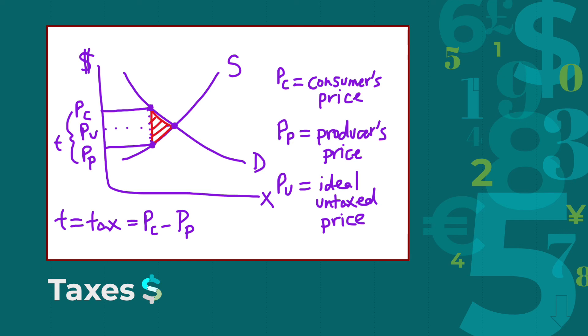The problem with taxes is that it raises the price consumers have to pay, and lowers the price producers can sell goods for, leading to a less desirable and economically inefficient scenario for both. This is because consumers have to not only take into account the cost of the good alone, but also a tax on top of that, and producers have to pay taxes for every good they sell, lowering the amount of money they can make.